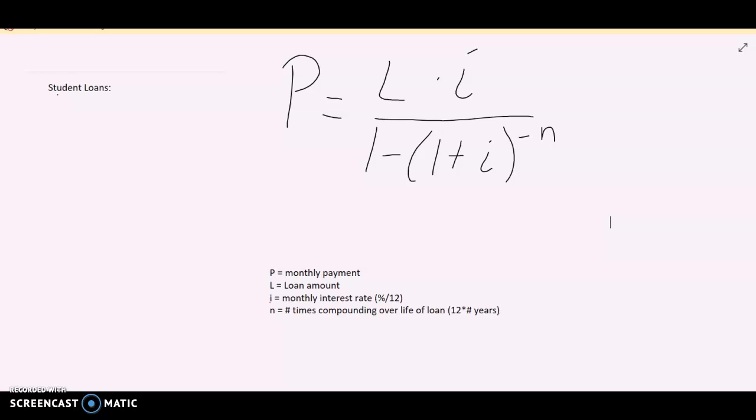N is the number of times you're compounding over the life of the loan. So if the loan is 10 years and you pay it monthly, that's 10 times 12. So keep that in mind as we work through.